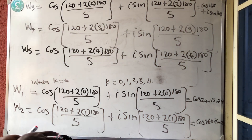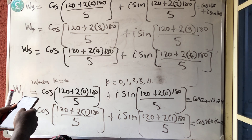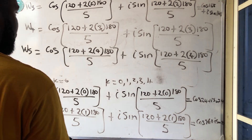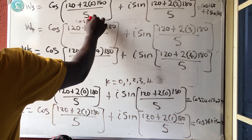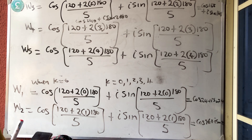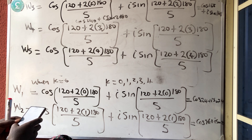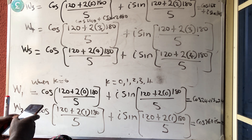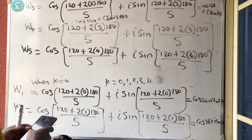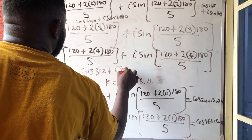For W4: 2 × 3 = 6, so 6 × 180 = 1080, then plus 120, divide by 5, giving 240. So W4 = cos 240 + i sine 240. For W5: 2 × 4 = 8, so 8 × 180 = 1440, then plus 120, divide by 5, giving 312. So W5 = cos 312 + i sine 312.